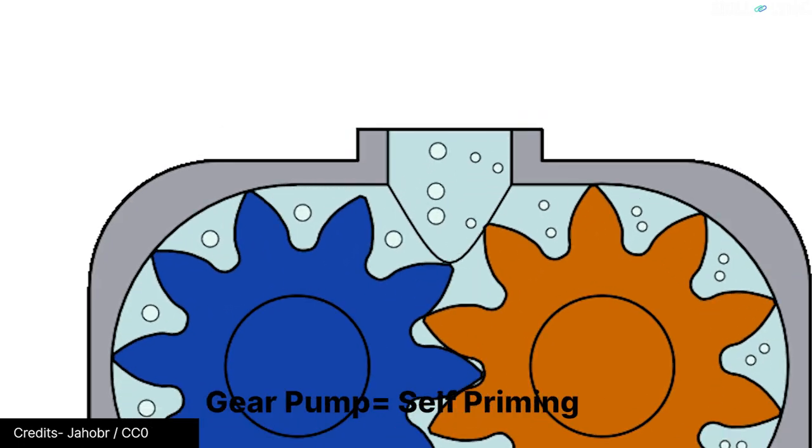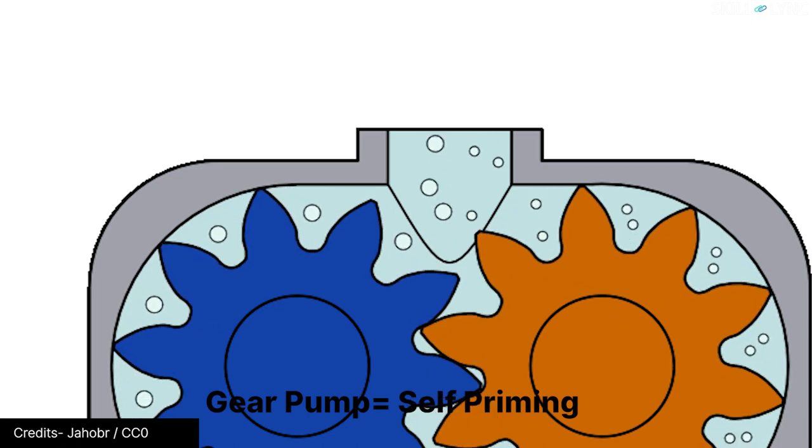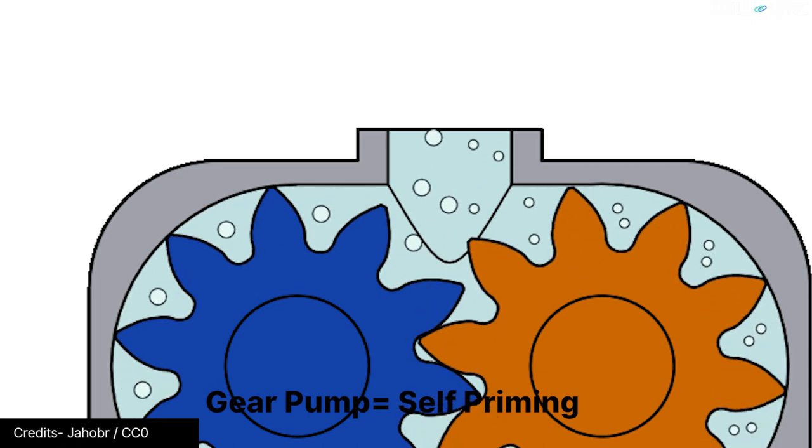As the gears now remesh together, the total volume will reduce. This forces the fluid out of the pump through the discharge pipe. This ends the discharge operation.